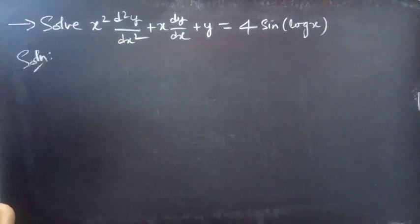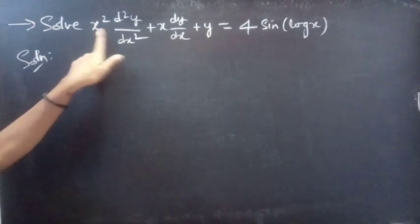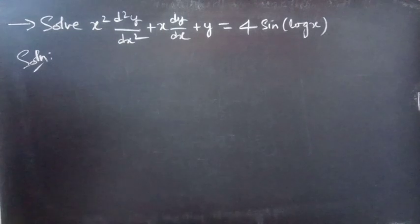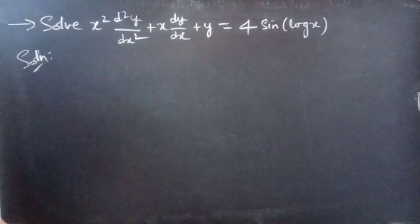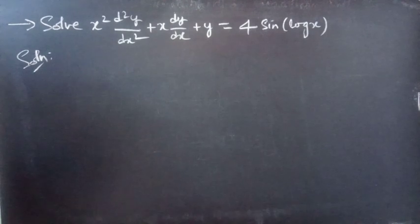We are given a higher order differential equation with variable coefficients. So we are going to reduce this to Cauchy's equation and later reduce that to a higher order linear differential equation with constant coefficients.